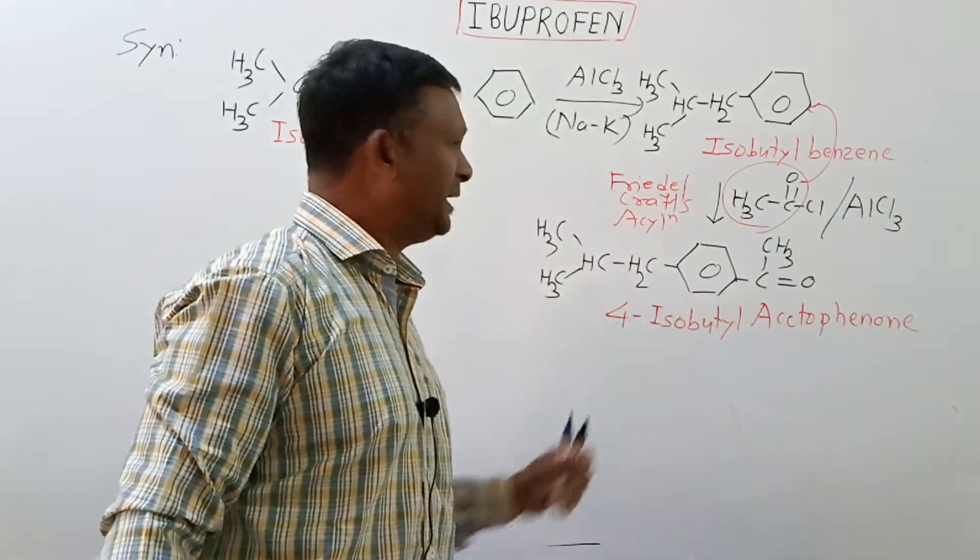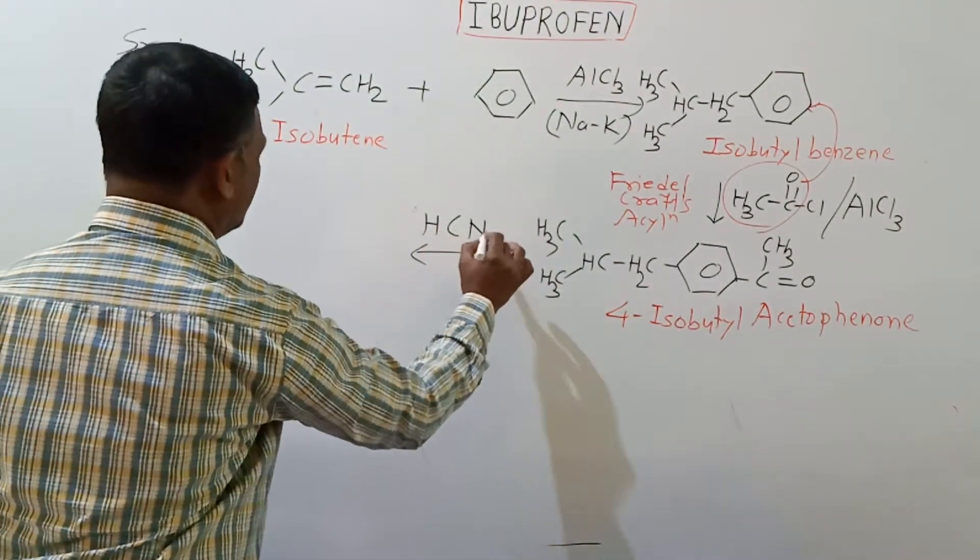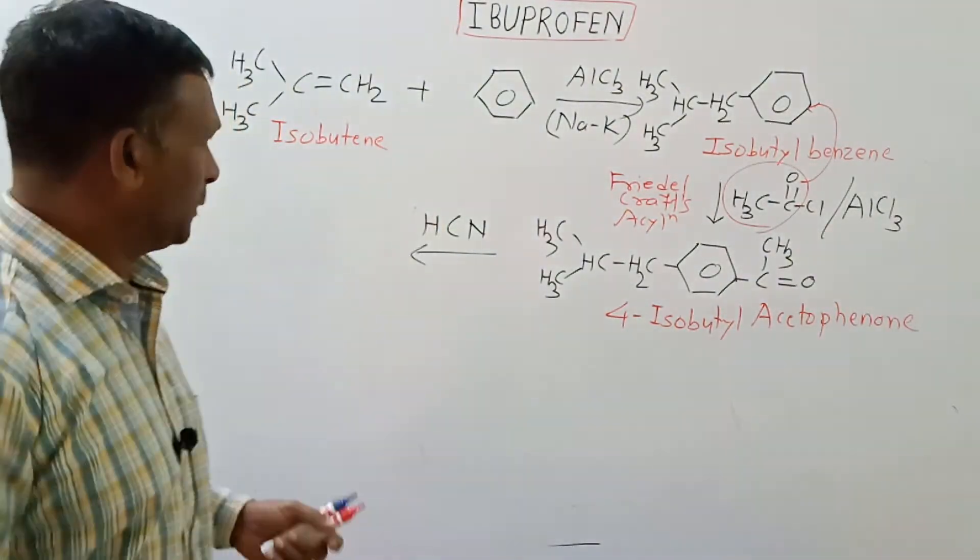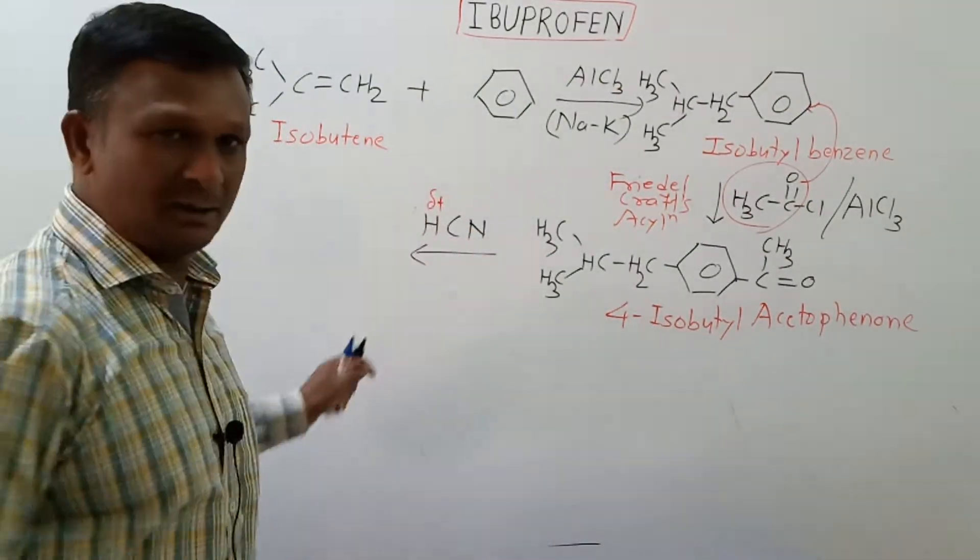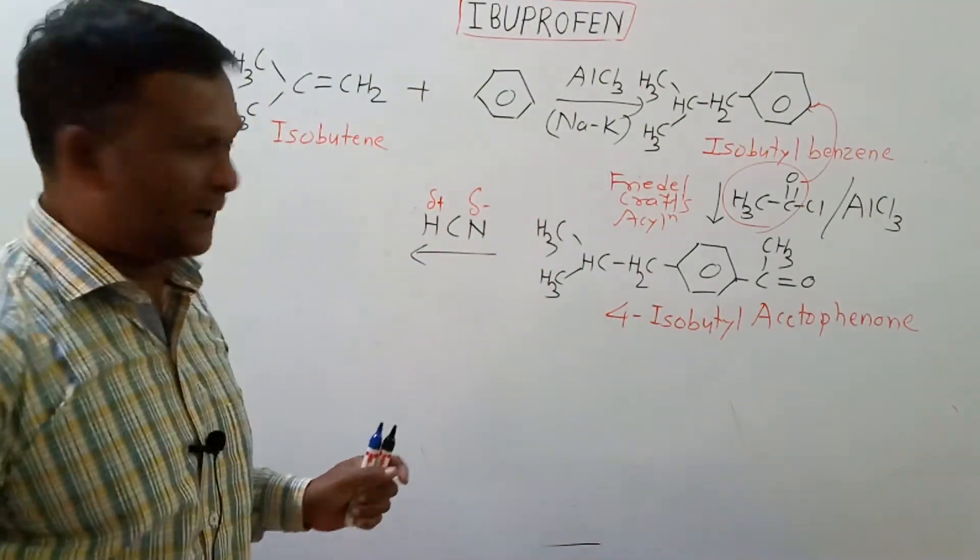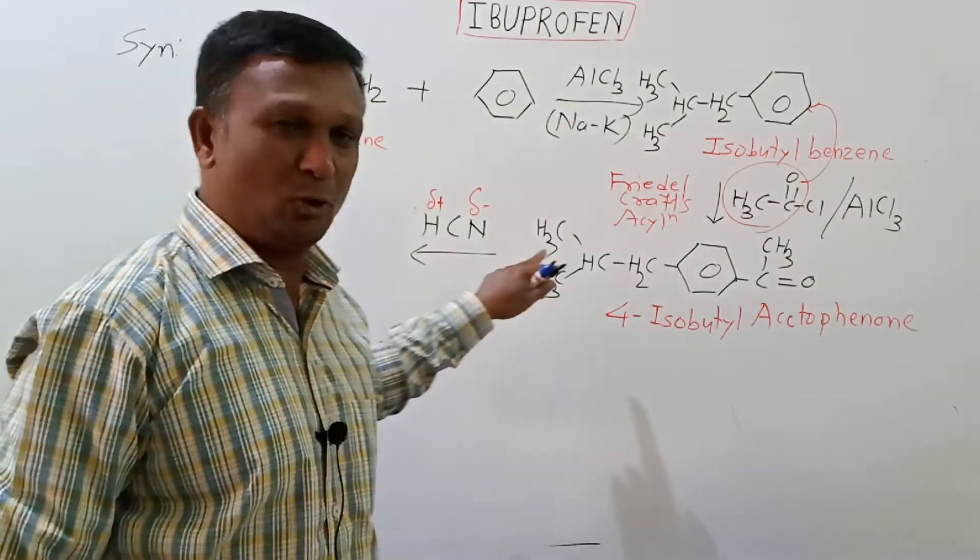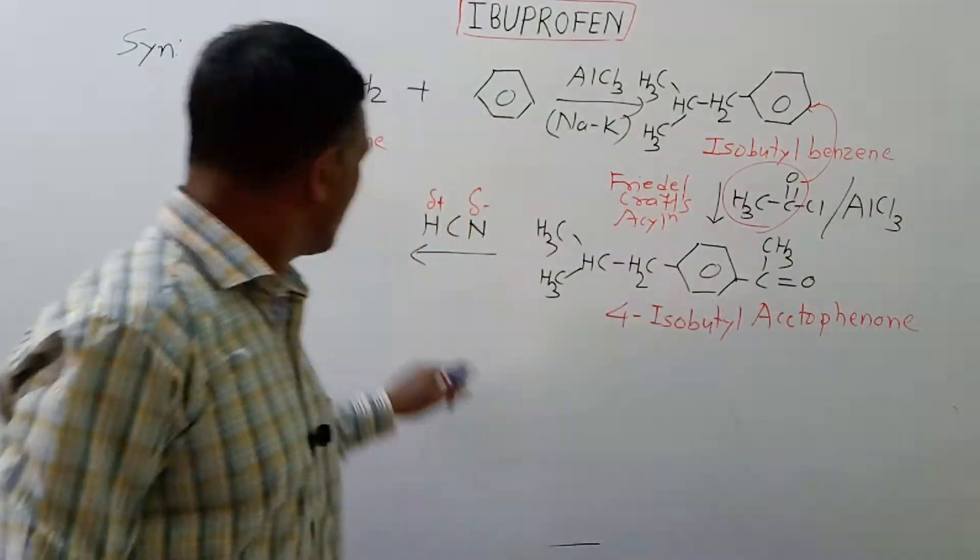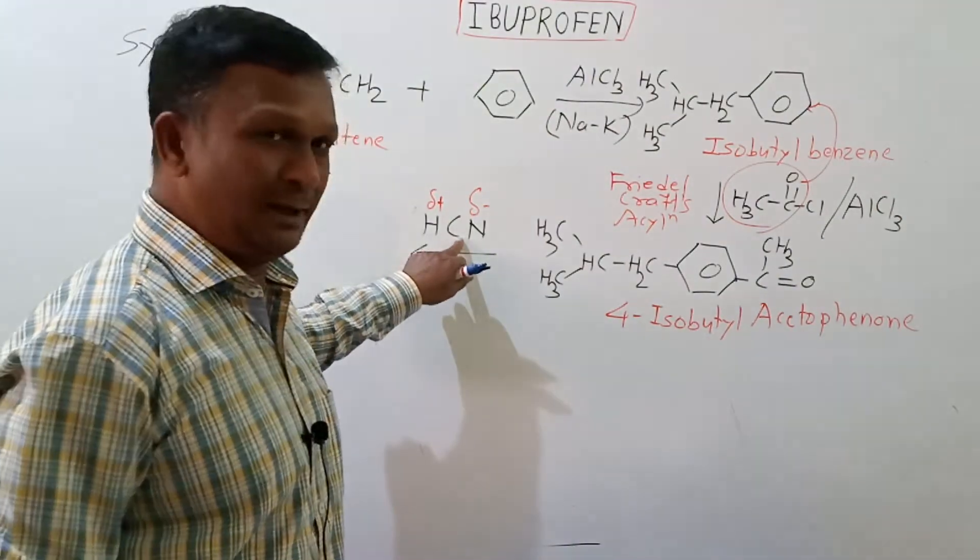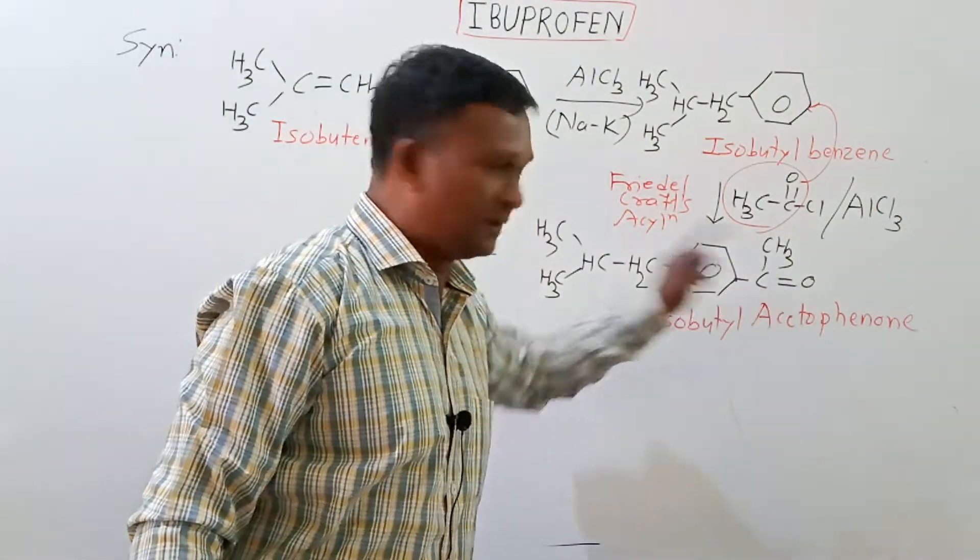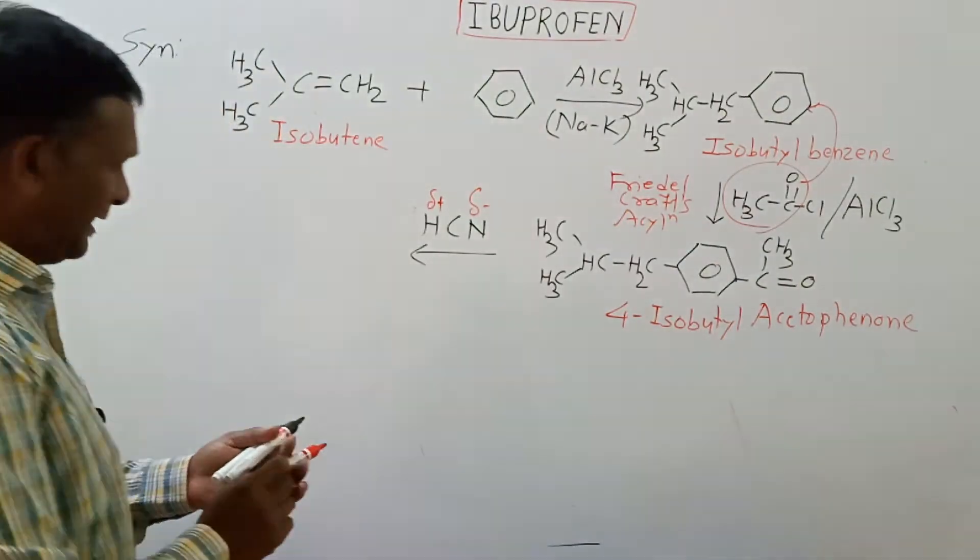This acetophenone derivative is then reacted with HCN, that is hydrogen cyanide molecule. If we look at HCN, the hydrogen acquires the partial positive charge while the CN acquires the partial negative charge. And this undergoes addition on this carbonyl group. This is a very familiar nucleophilic addition reaction of hydrogen cyanide onto the carbonyl group. The hydrogen which is positively charged will go onto this negatively charged oxygen, while this negatively charged CN will go onto this positively charged carbon which is a nucleophilic center to give us the formation of an addition product which is called as cyanohydrin.